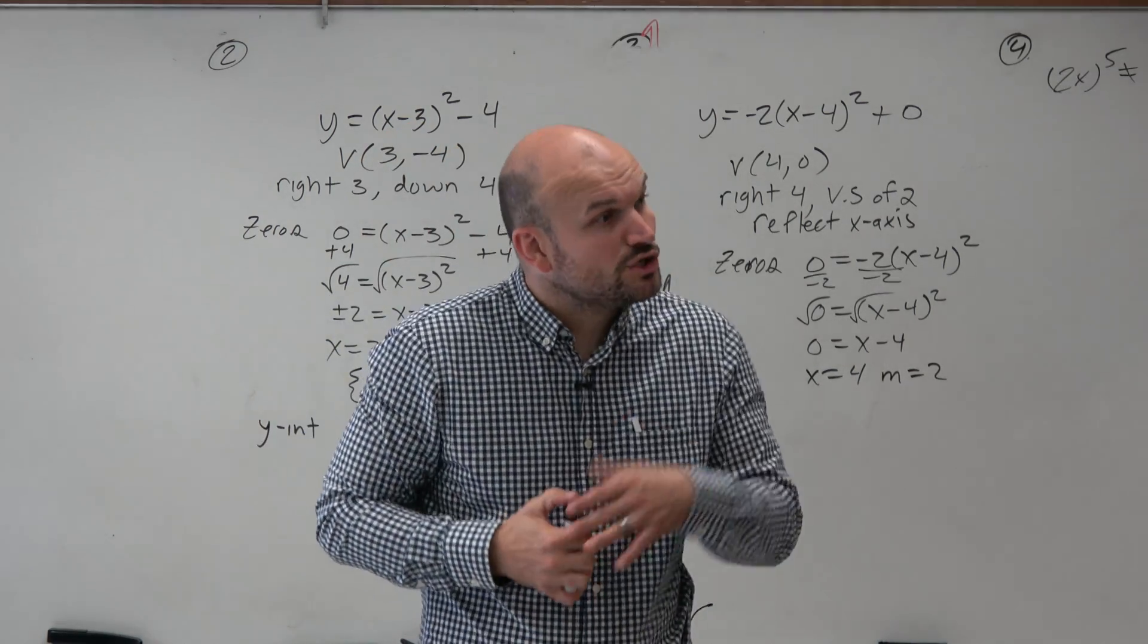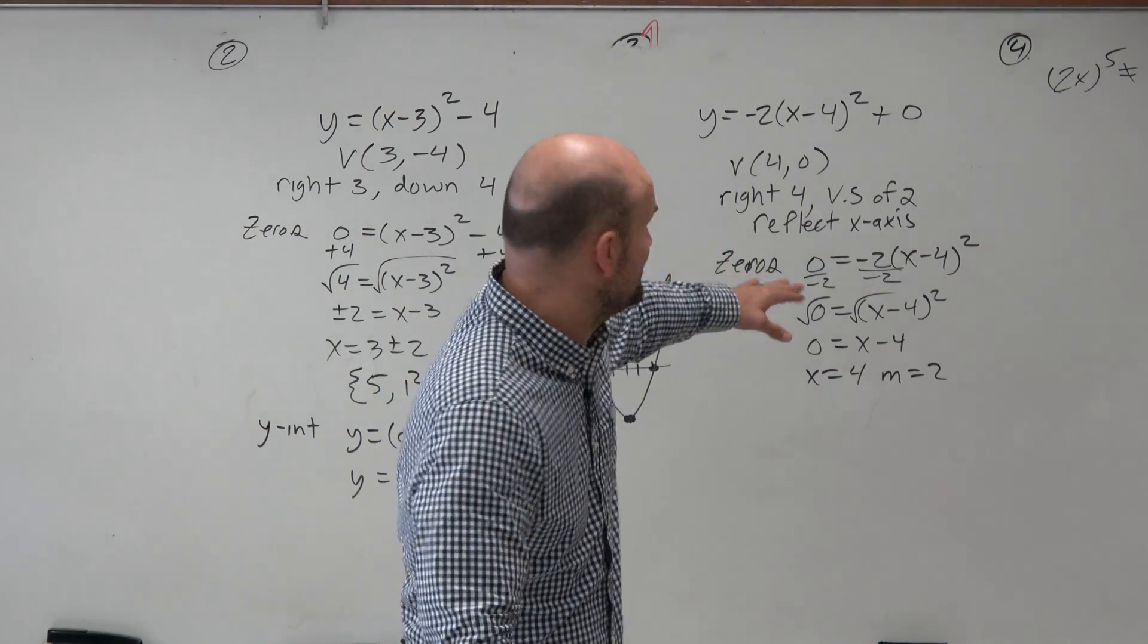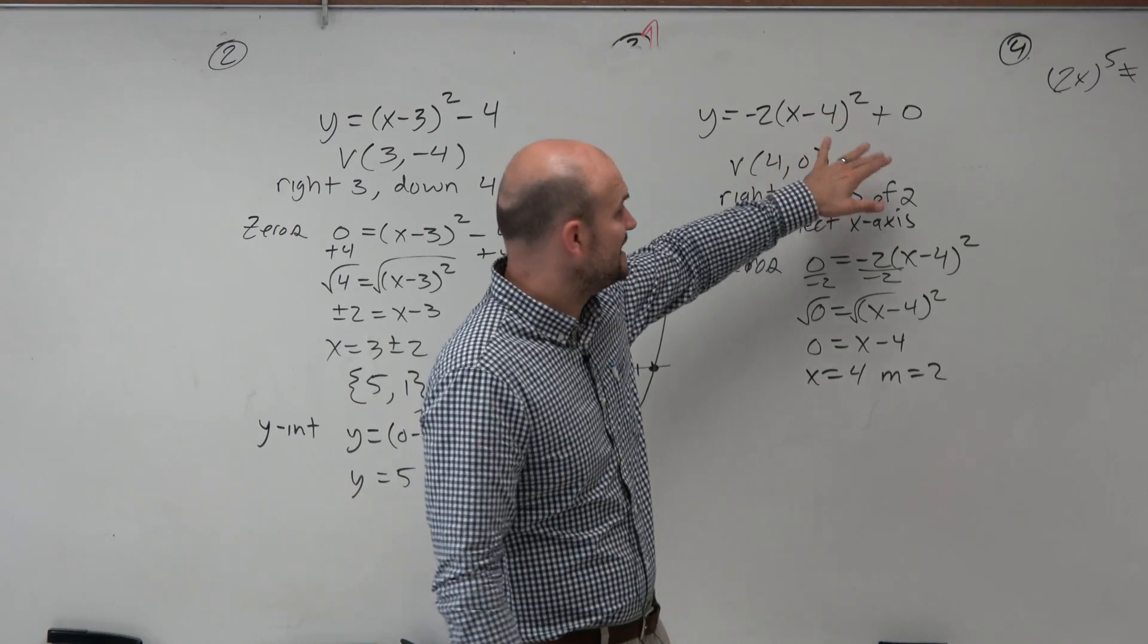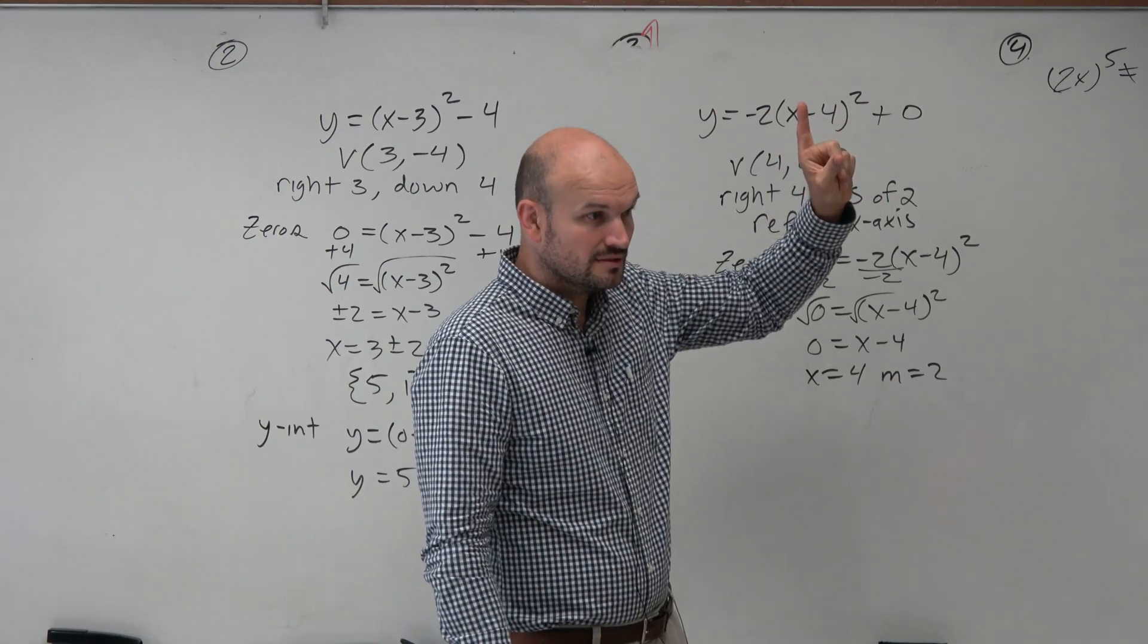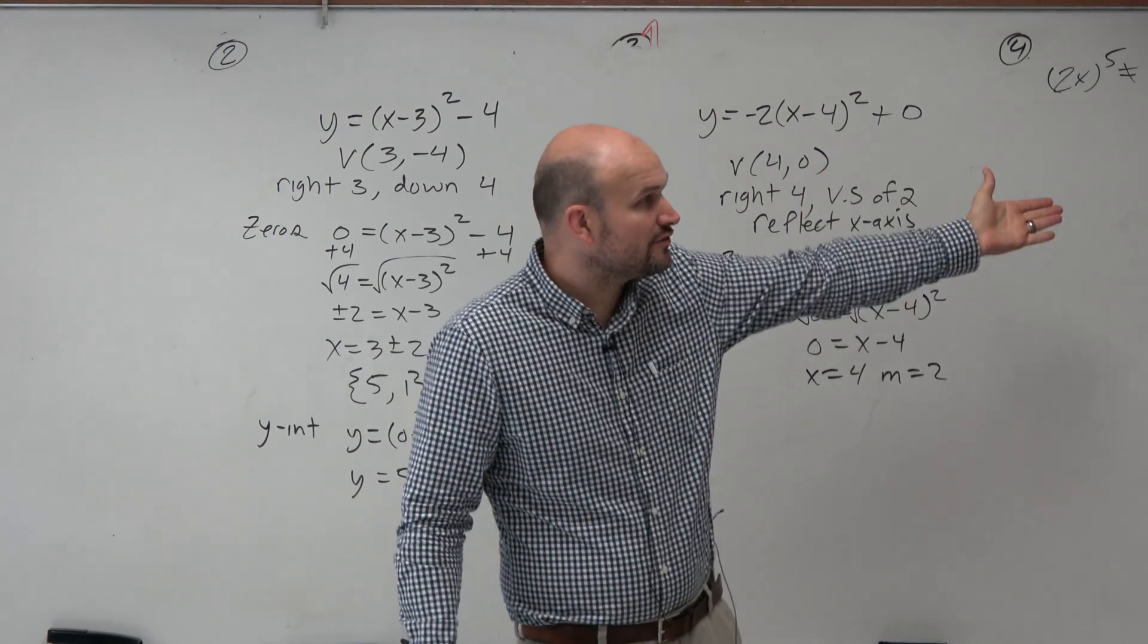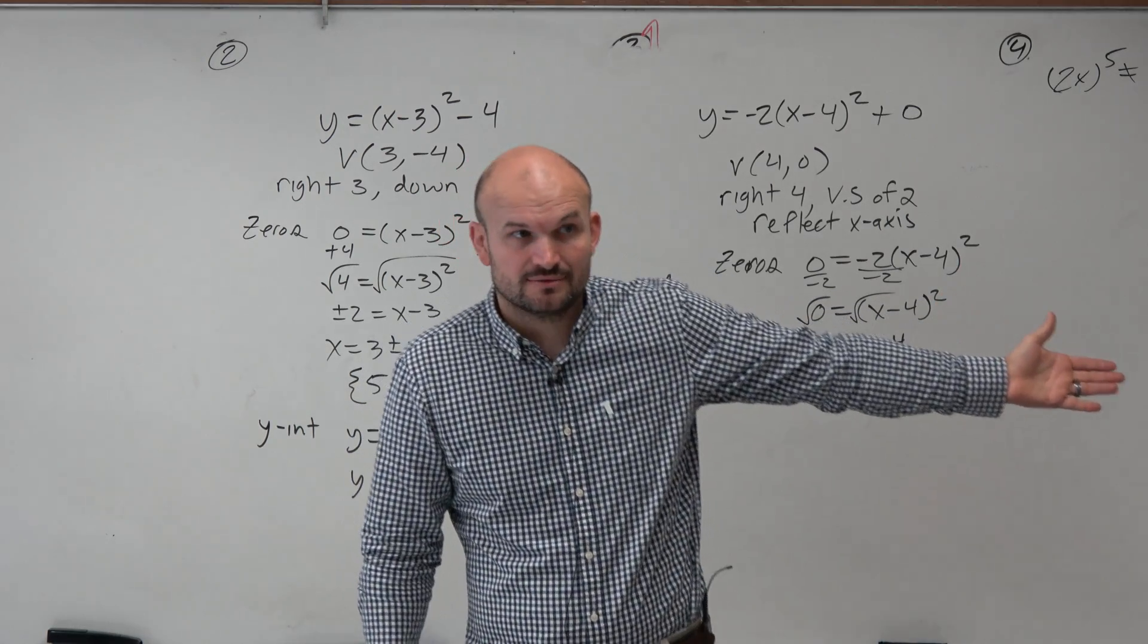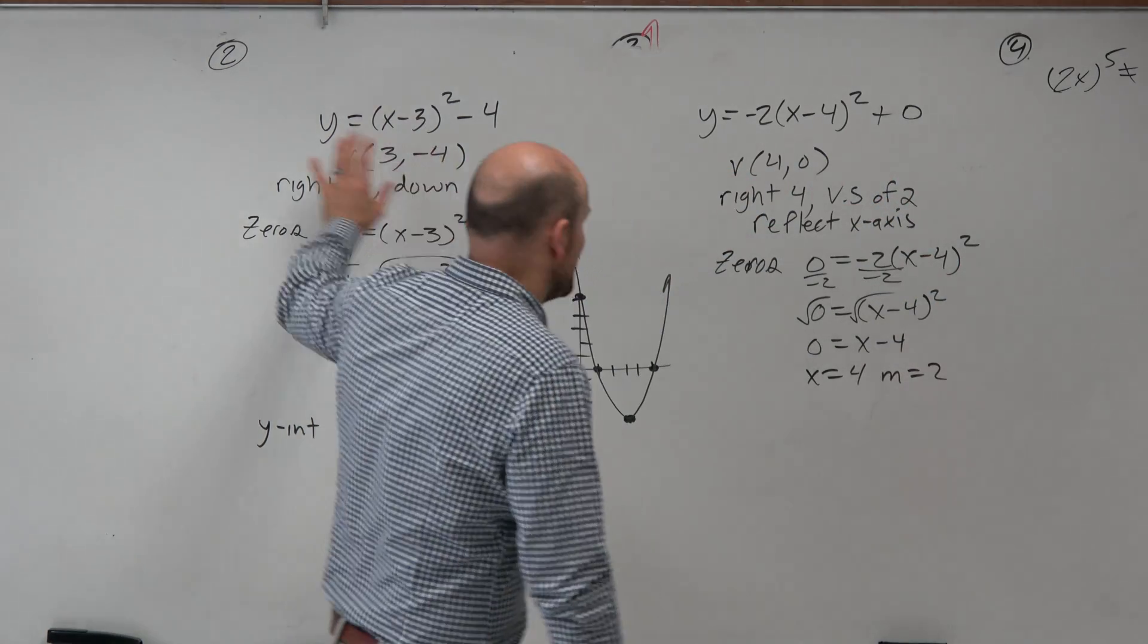So this one, actually, you could have found the zeros just by looking at the equation. Because is there any addition? You just have one factor. So it's in your factorized form. This form is different than that form.